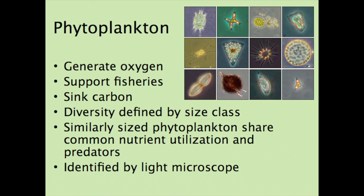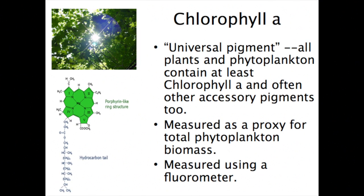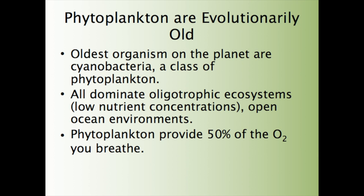Phytoplankton are the foundation of the food web. They generate oxygen, support fisheries, and sink carbon, and they are identified by their size class. Chlorophyll A is called the universal pigment because all plants and phytoplankton contain at least chlorophyll A, and often other accessory pigments too. Chlorophyll A is also used as a proxy for total phytoplankton biomass. Phytoplankton are evolutionarily old — they are the oldest organisms on the planet — and they dominate oligotrophic environments, places in the ocean with low nutrient concentrations. Phytoplankton are responsible for 50% of the oxygen you breathe.